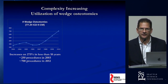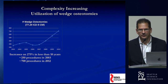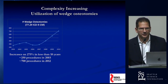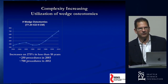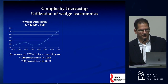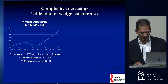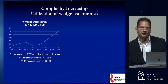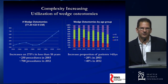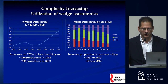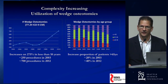In ASD, the complexity of procedures is increasing. One interesting phenomenon is the inflection point in the utilization of wedge osteotomies in the U.S. around when the Glassman paper was published in Spine in 2005-2006, starting to link the sagittal plane to outcomes. We saw a significant increase in the use of wedge osteotomy, and the older patient population — over 65 — showed the greatest increase.